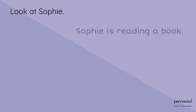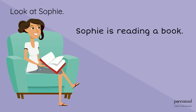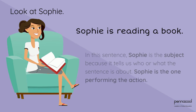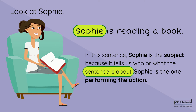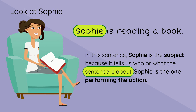Look at Sophie. Sophie is reading a book. In this sentence, Sophie is the subject because it tells us who or what the sentence is about. Sophie is the one performing the action.